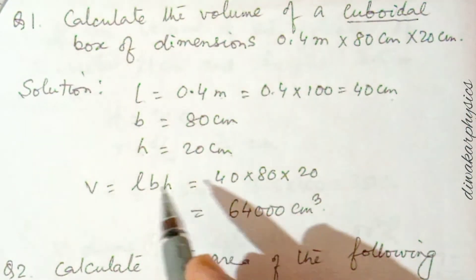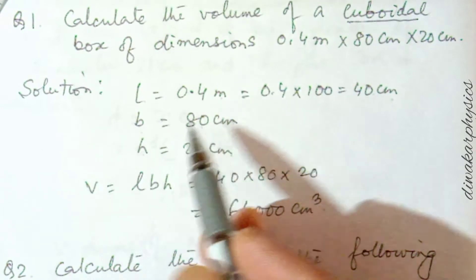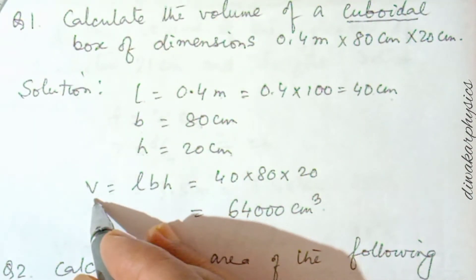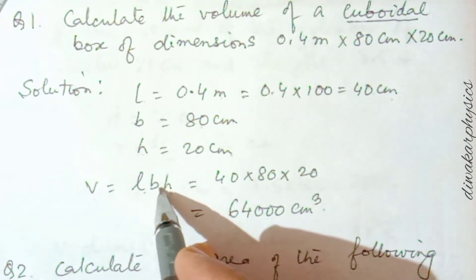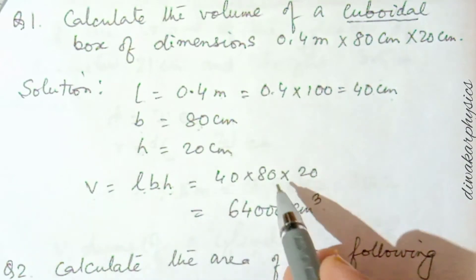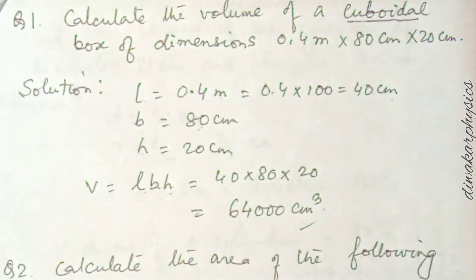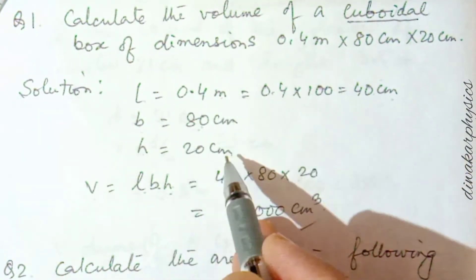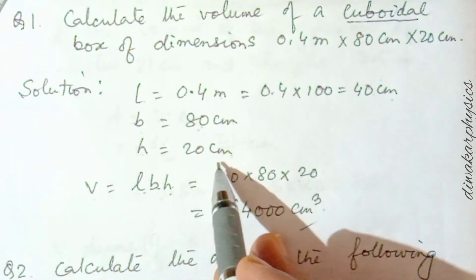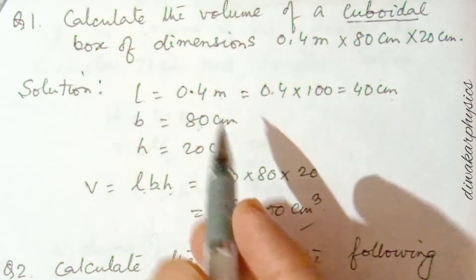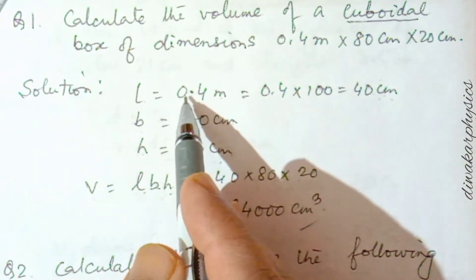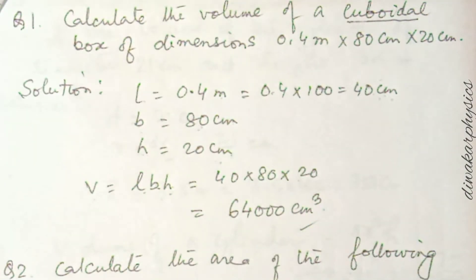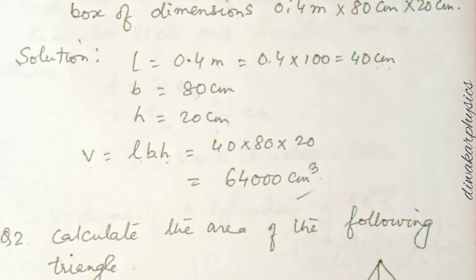Now we have length = 40 cm, breadth = 80 cm, height = 20 cm. The formula for volume of a cuboid is length × breadth × height. So 40 × 80 × 20 gives the answer. Be careful to convert all units into the same system — either all in meter or all in centimeter. If you put 0.4 × 80 × 20 without converting, you will be wrong.